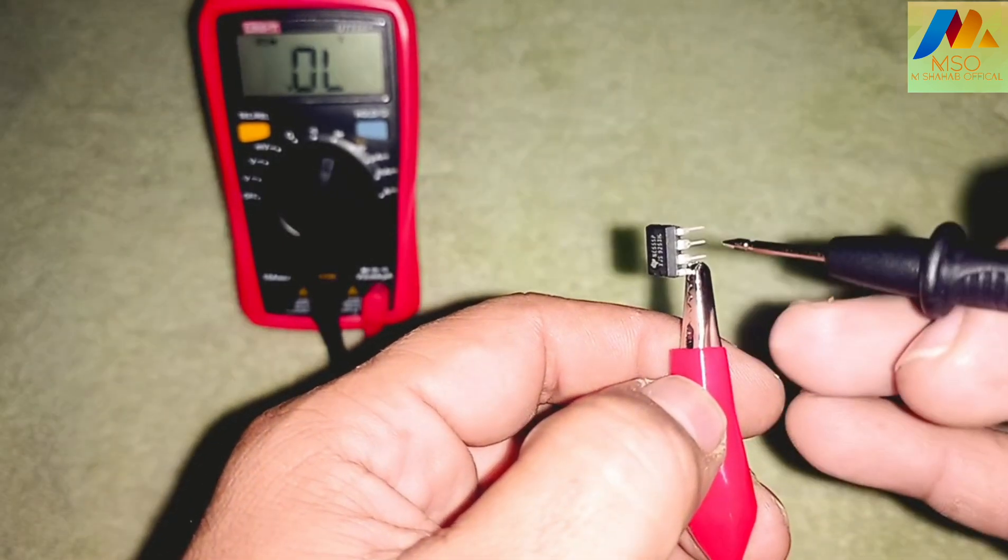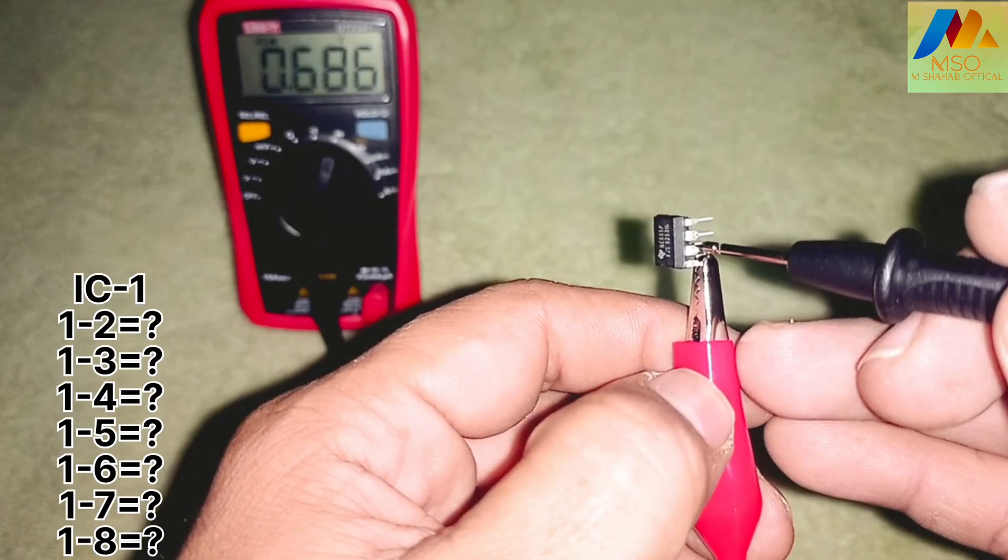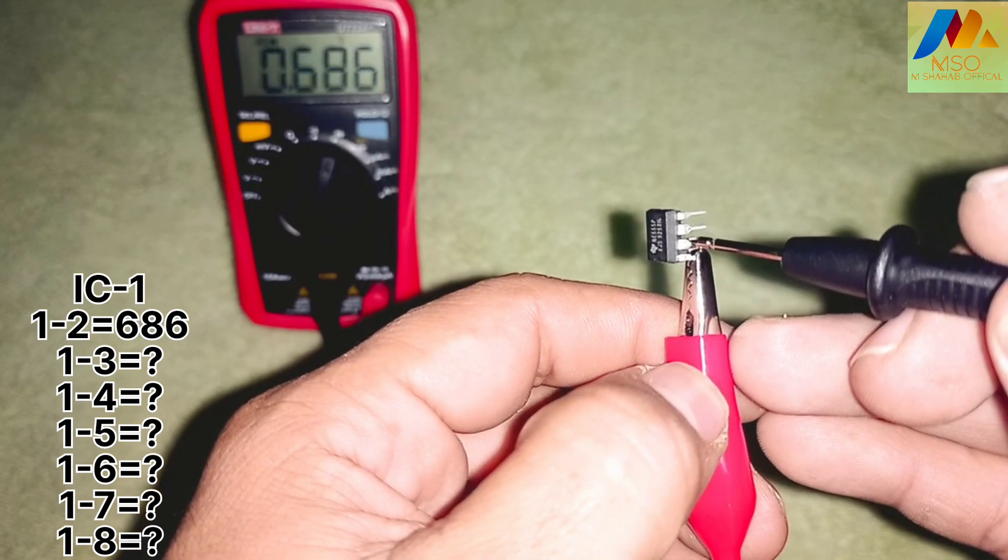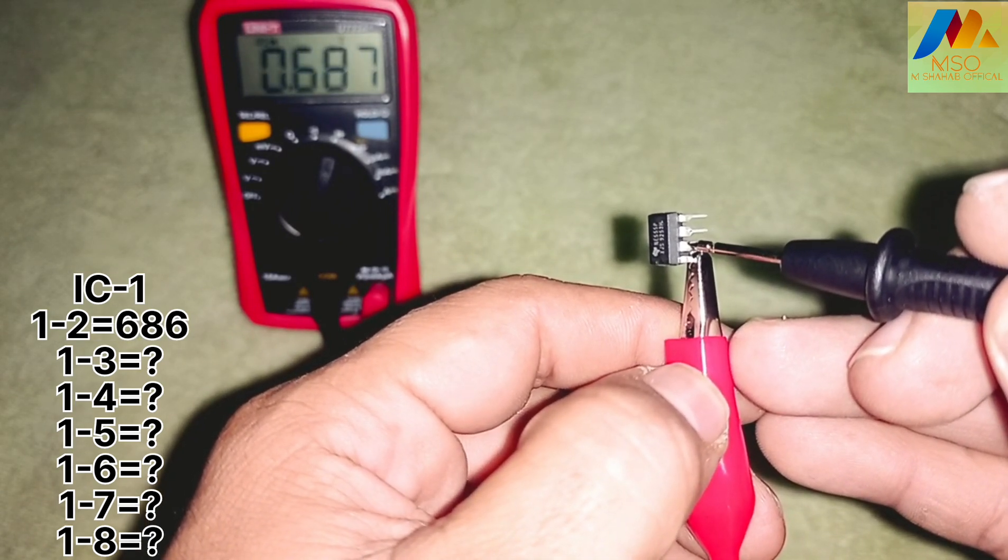Now we will connect the negative probe of the multimeter to pin number 2, 3, 4, 5, 6, 7, and 8 in sequence and note the readings.